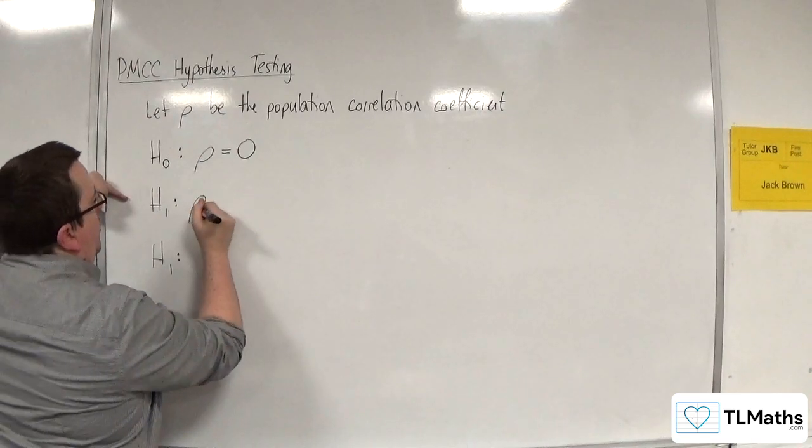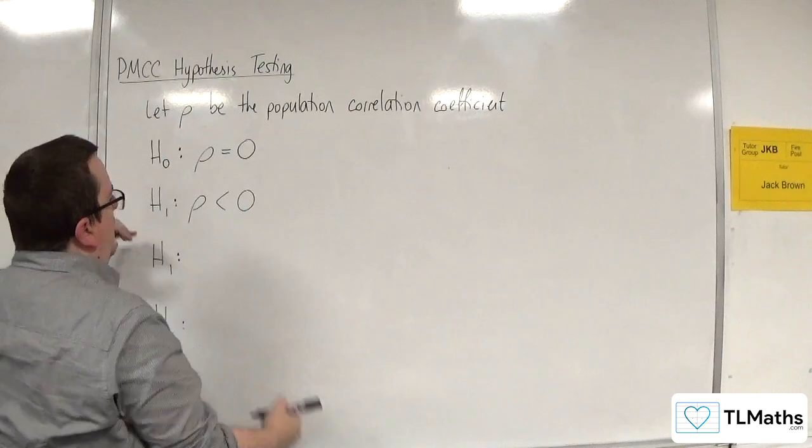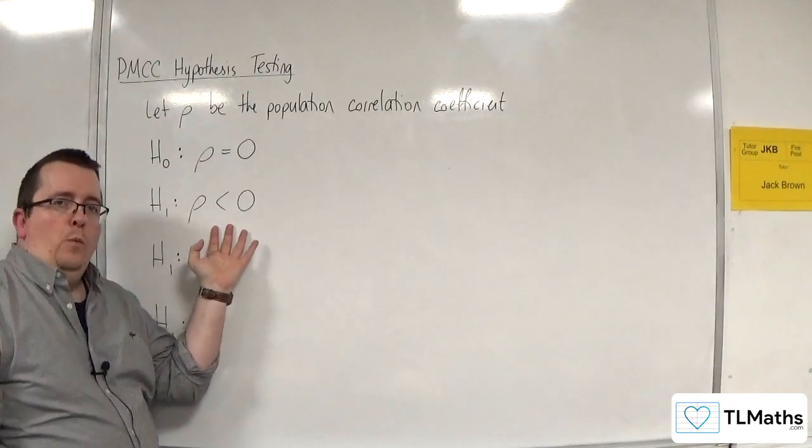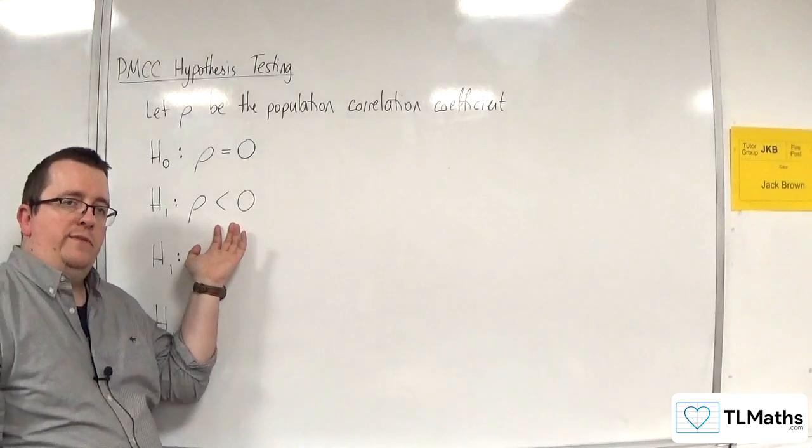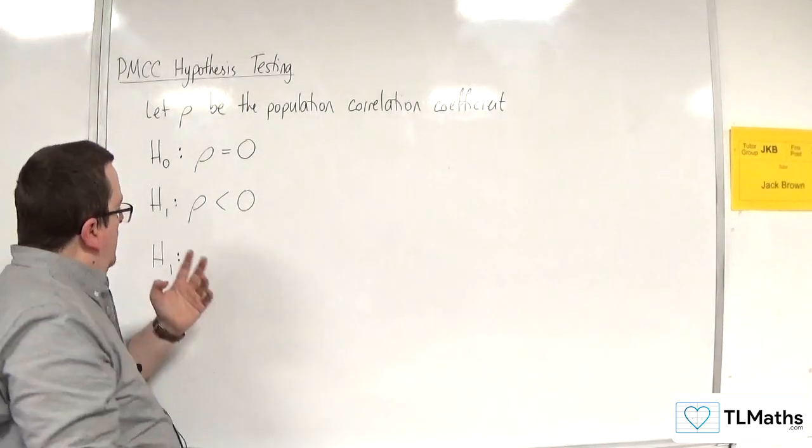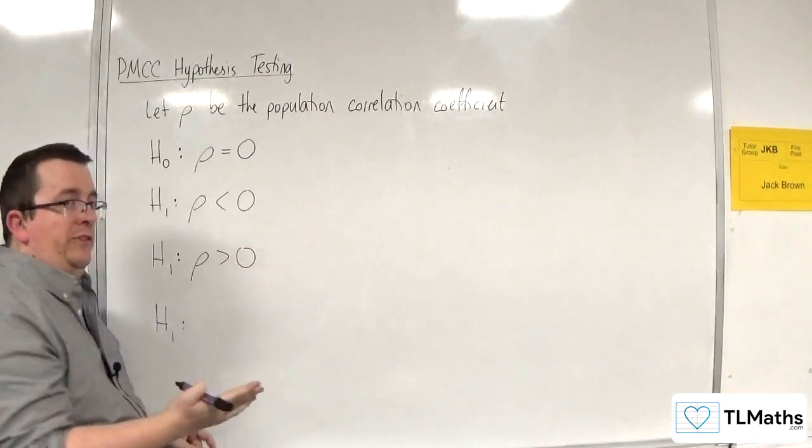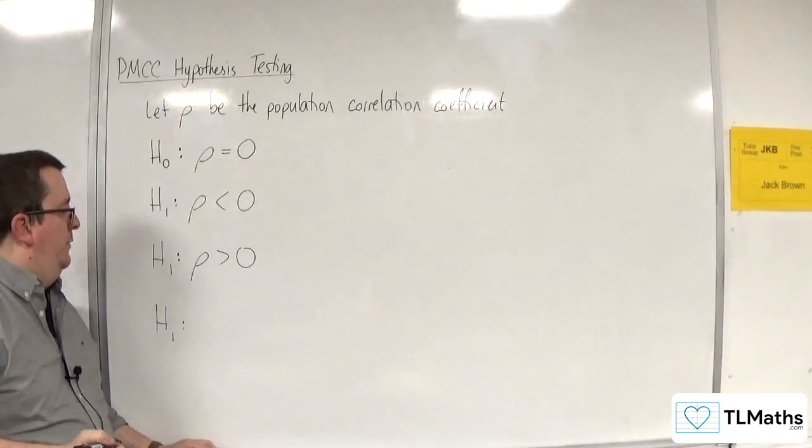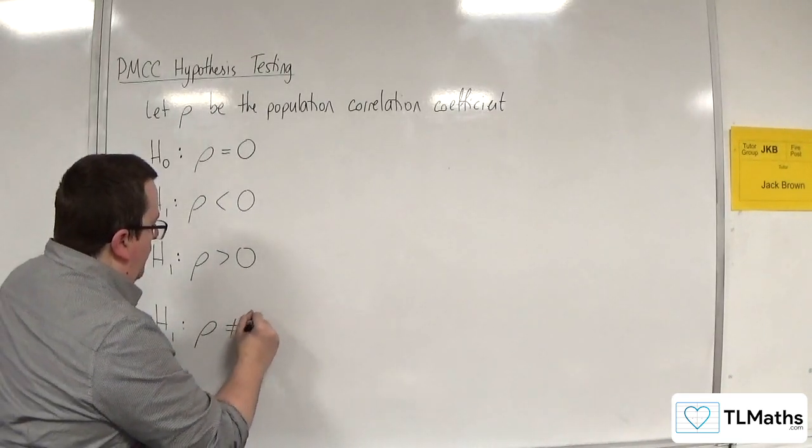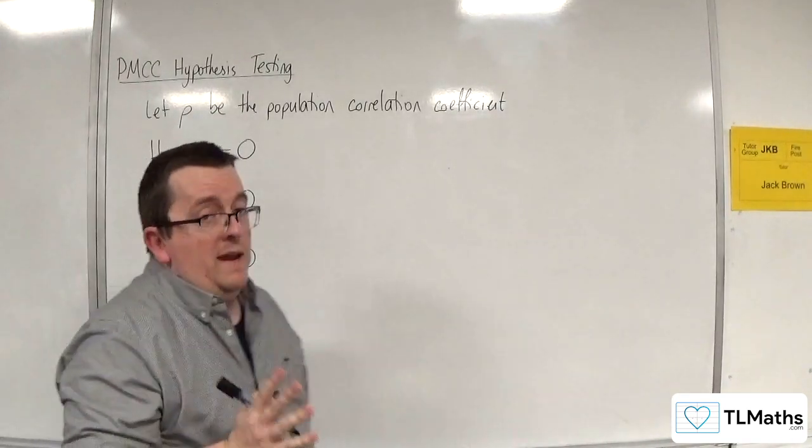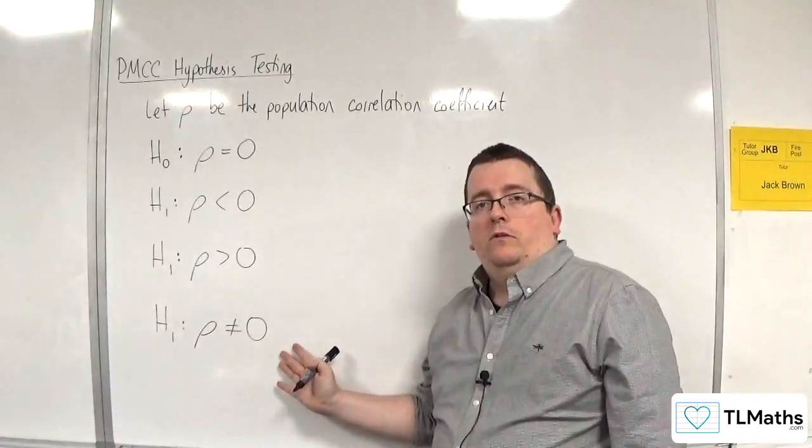The first one is that rho is negative. So that means we're testing whether there is a negative correlation between the two variables. Or rho is positive, so there is a positive correlation between the two variables. Or rho is not equal to 0, which means that there is some correlation.